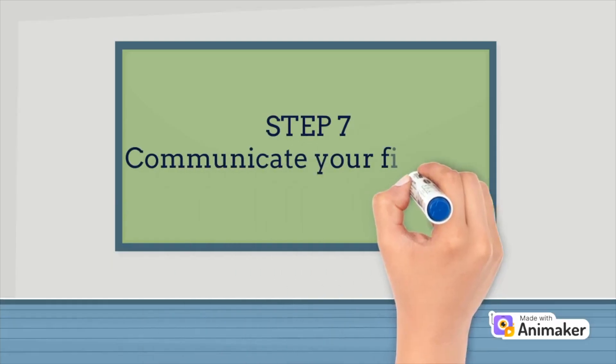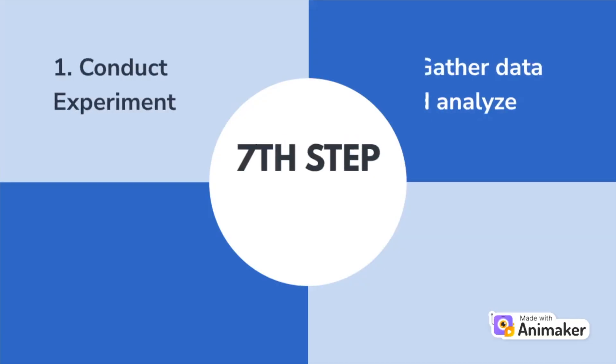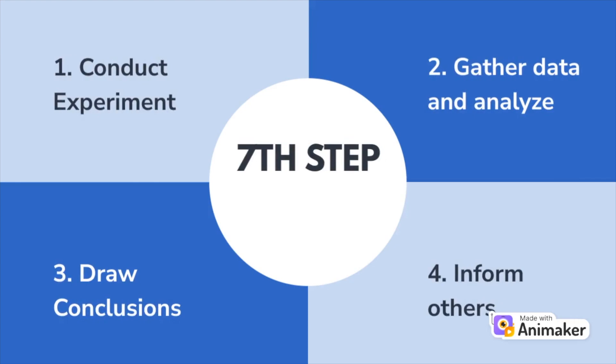The final step of the scientific method process is to communicate your findings. This is so important because you spent all this time and effort in order to conduct an experiment, gather data, analyze it, draw conclusions. And so now you want to inform others about your findings.